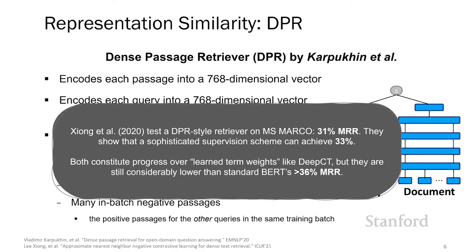DPR was not tested on the MS-Marco dataset by the original authors, but subsequent work tests a DPR-like retriever on MS-Marco and achieves 31% MRR. They also suggest more sophisticated supervision approaches which can increase this MRR by a couple of points. Both of these demonstrate considerable progress over learned term weight models like DeepCT or Doc2Query, but they still substantially trail behind BERT's much higher effectiveness.